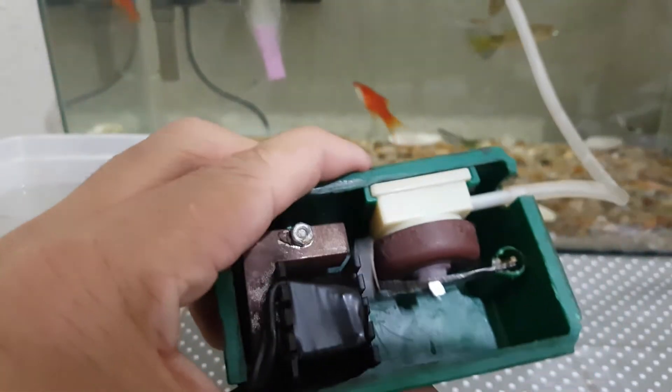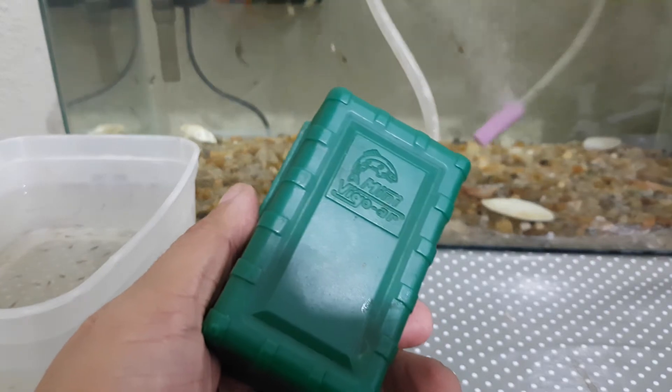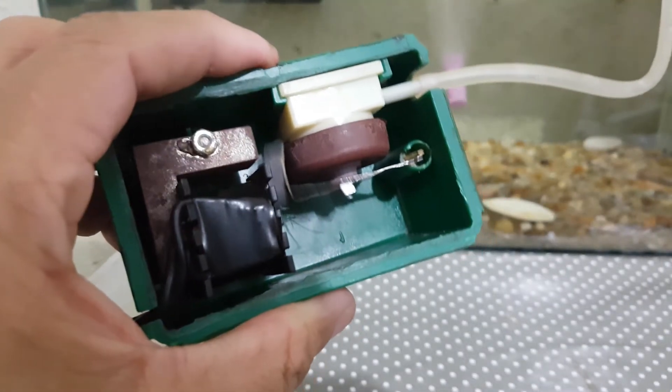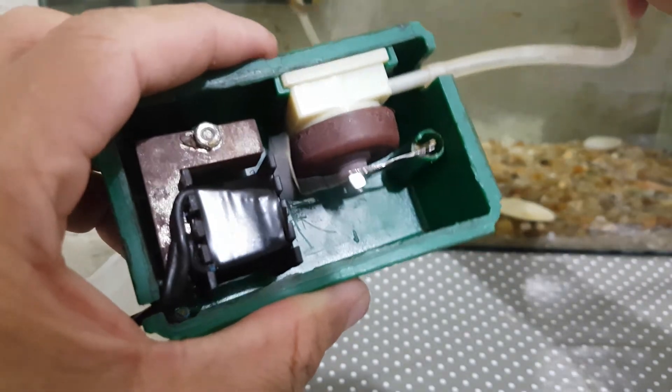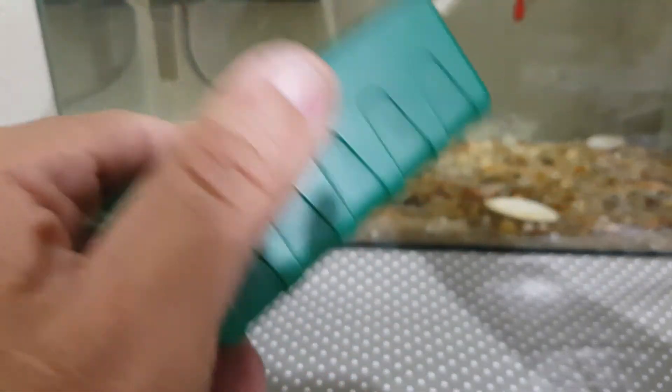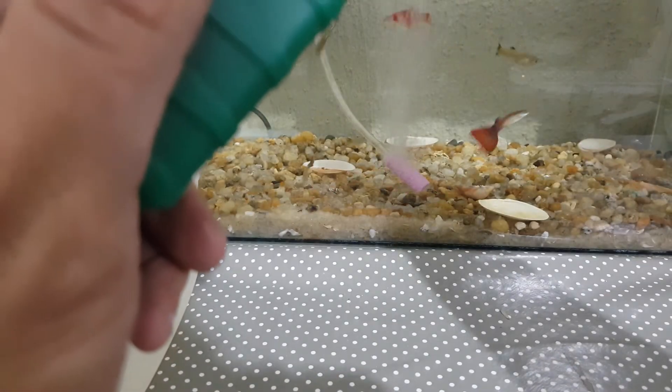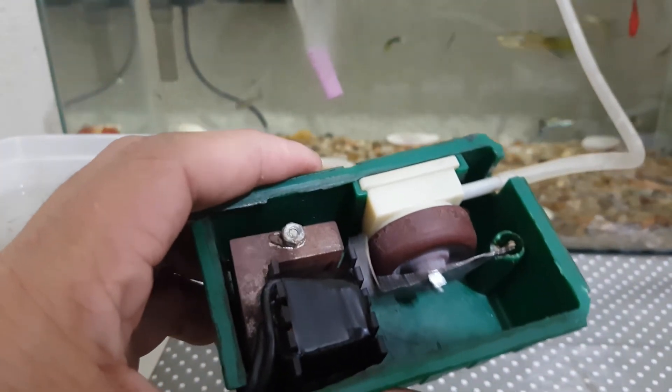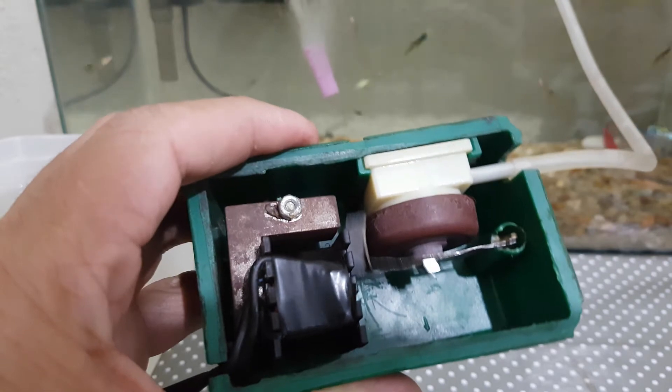Então ele produz bastante oxigenação, bastante bolha, falando de grosso modo, produz em uma quantidade bem bacana. Essa bombinha, esse compressor, galera, ele é bom para caramba. Não estou fazendo propaganda não porque eu não estou ganhando nada, mas no aquarismo a gente tem que mostrar para a galera o que realmente tem qualidade. Essa bombinha, por mais simples que ela seja, ela é muito boa. E com esse diafragma novo agora aqui, cheio de vida, ela está funcionando muito bem.